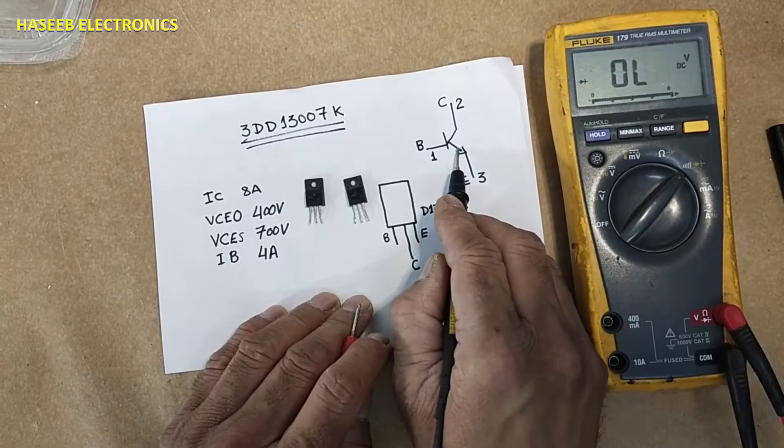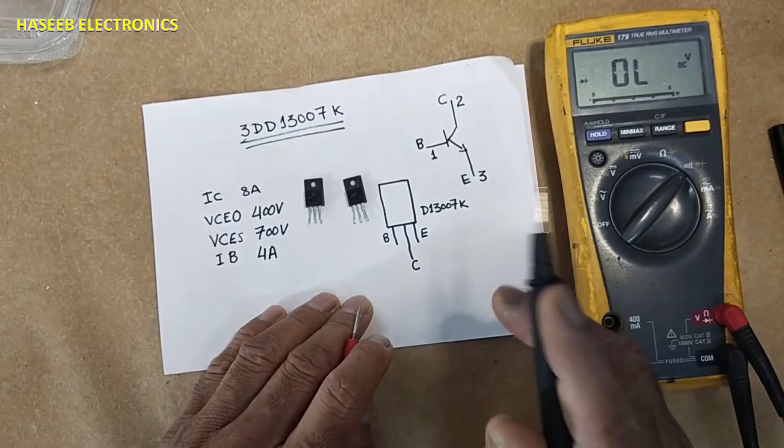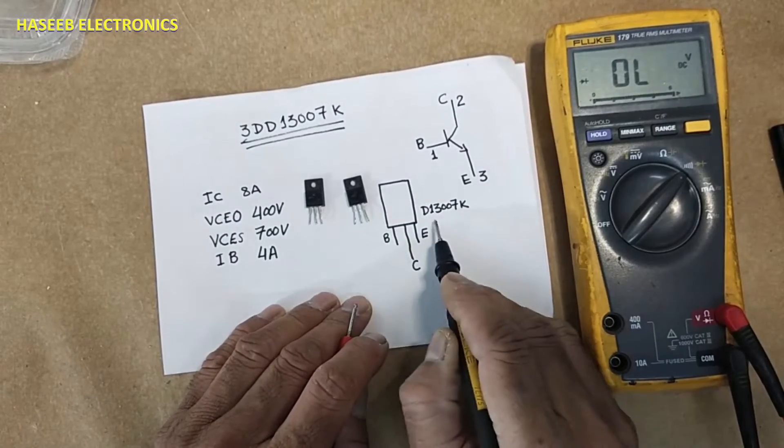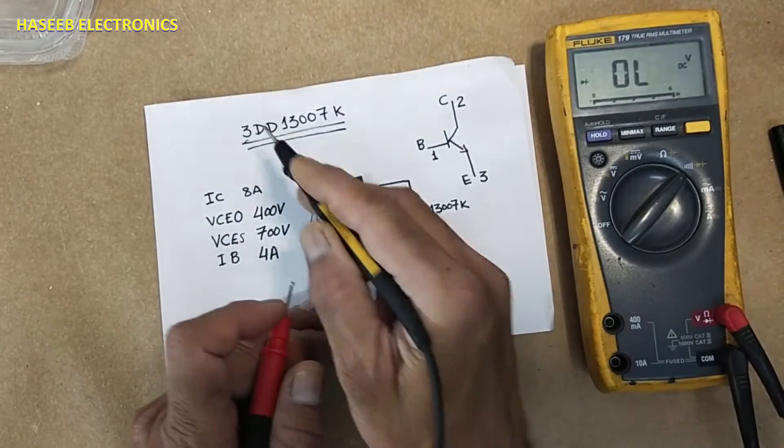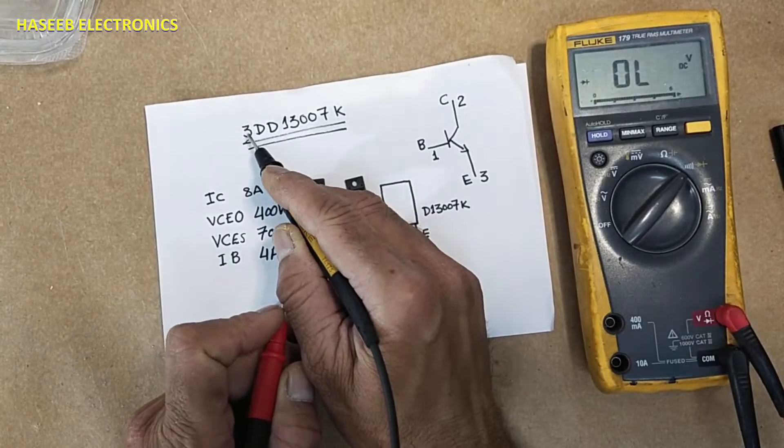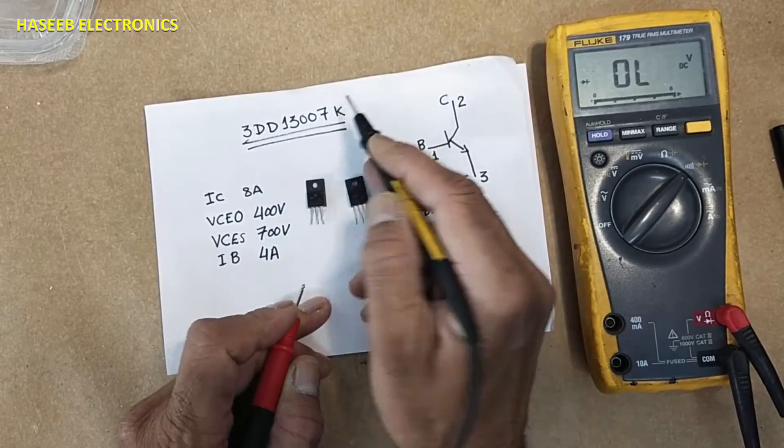NPN fast switching transistor. Marking on the body D13007 and complete part number 3DD13007K.